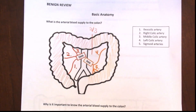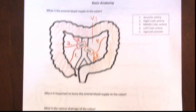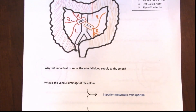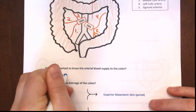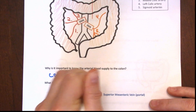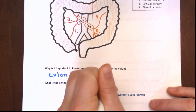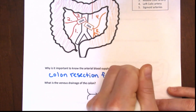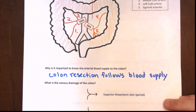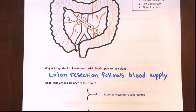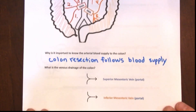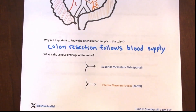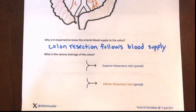The last branch of the IMA is the superior rectal artery, which we will talk about in detail when we discuss the arterial supply to the rectum. It's important to know the arterial blood supply to the colon when planning a partial colectomy, because which section and how much of the colon is taken follows the blood supply. For example, if you have a colon tumor in the middle of the ascending colon, you cannot just resect the section right where the tumor is — you would need to perform a complete right colectomy, since you're taking the right colic artery.